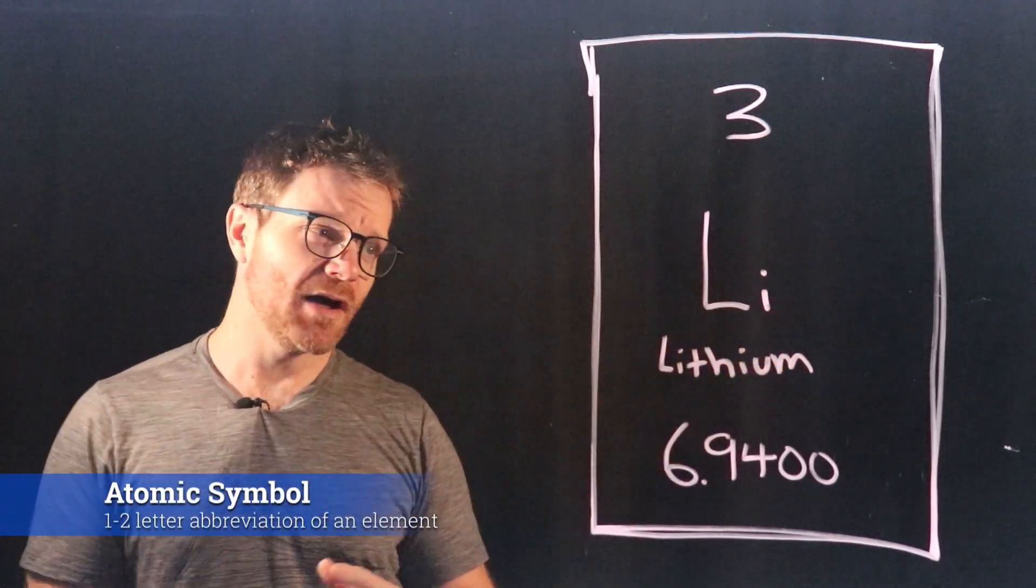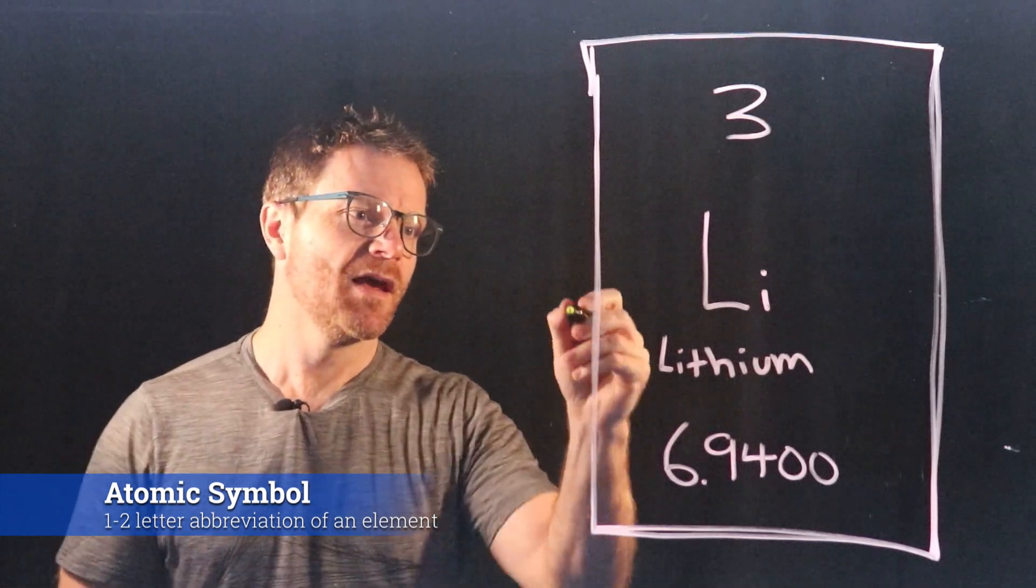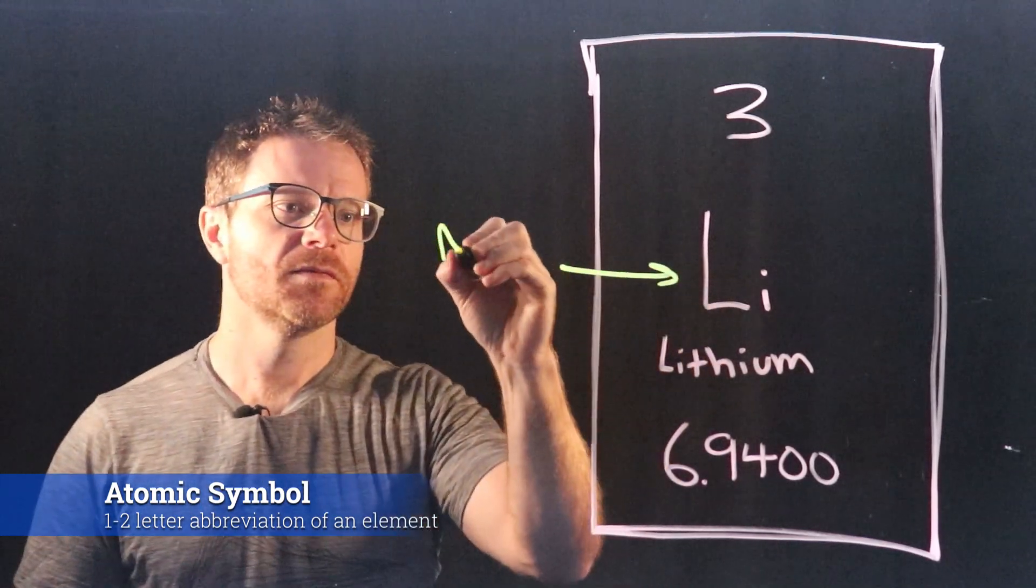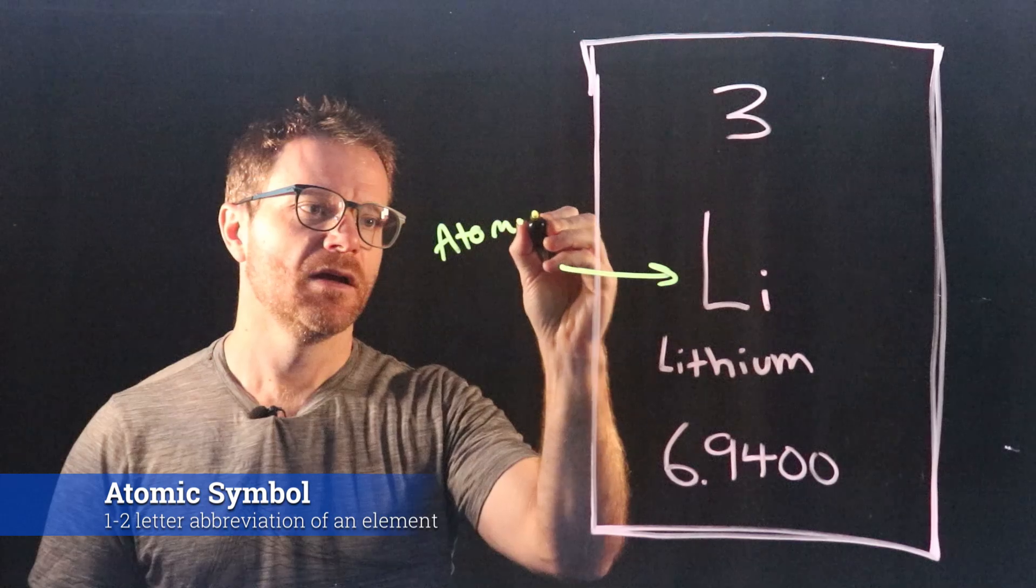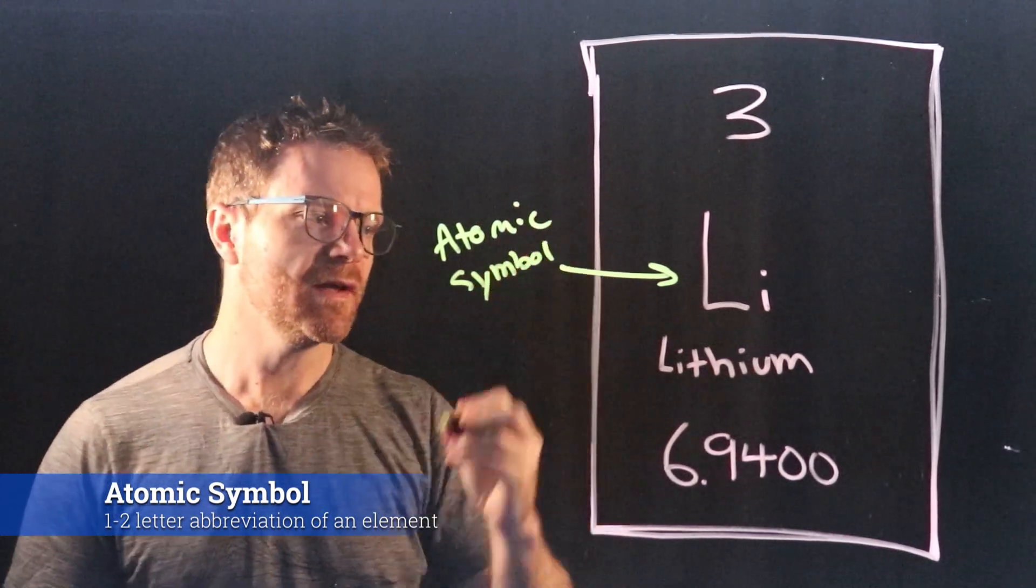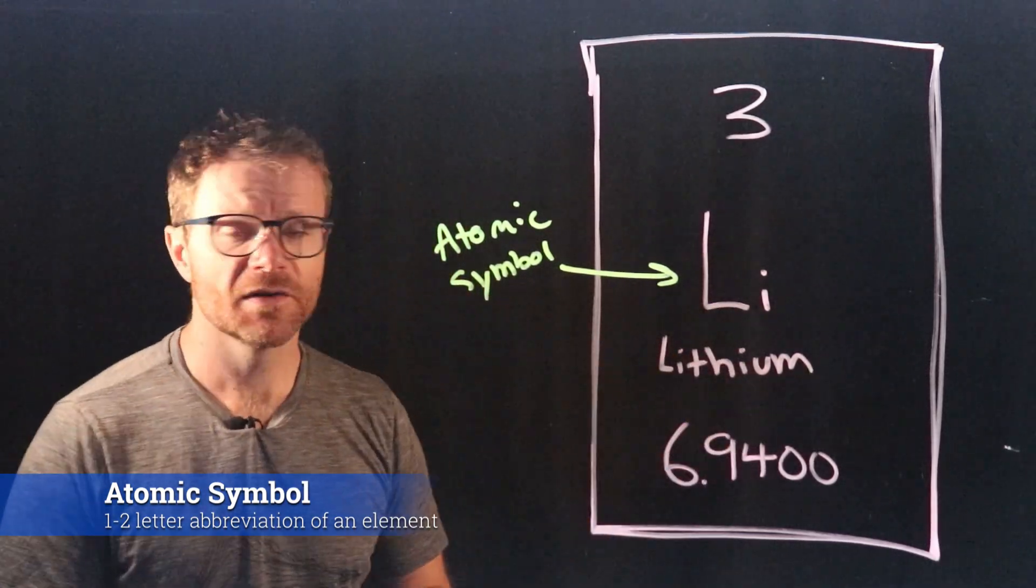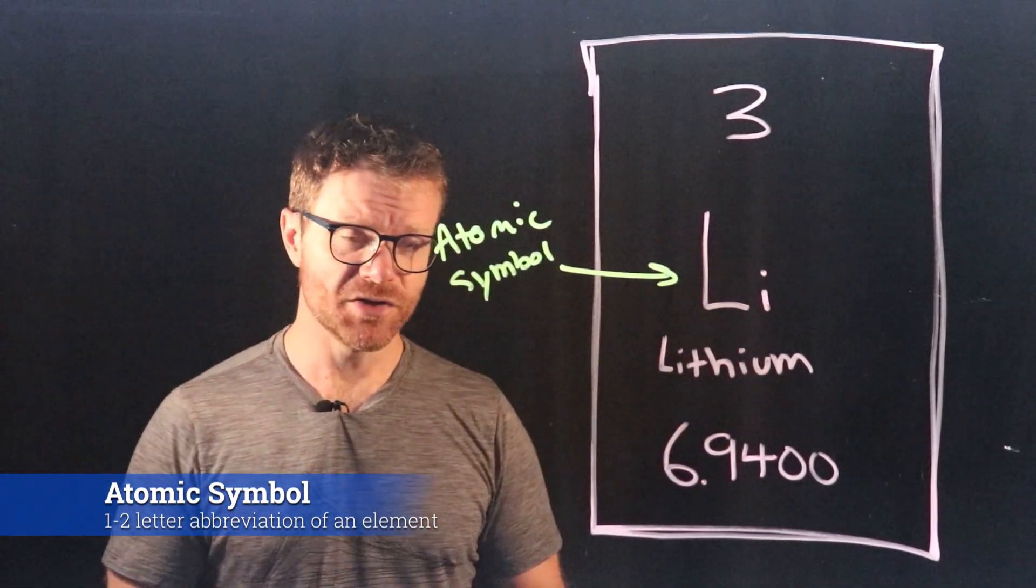Li is also fairly obvious. That's what's called the atomic symbol. The atomic symbol is just basically a short way of describing the element, because every time we do calculations we just want to write Li. We don't want to write out lithium. It will save us a lot of time and energy.